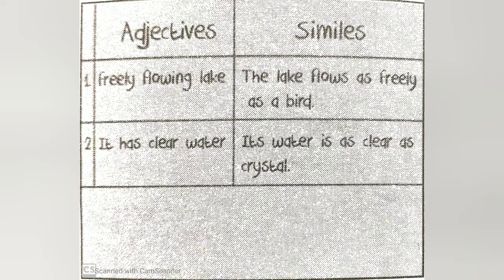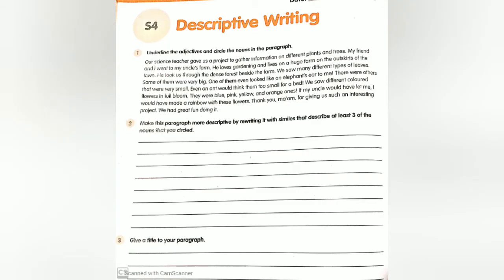First, make the paragraph descriptive by using adjectives. Next, think of another thing that can be described by the same adjective. For example, 'I saw a tree.' Make it more descriptive by saying 'I saw a tall tree.' Then think of another thing that is tall, like a giraffe. So we can write: 'I saw a tree as tall as a giraffe.'